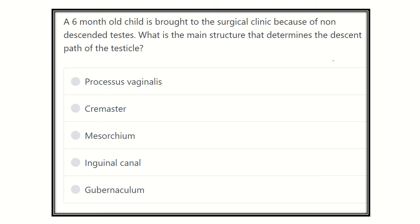Hi everyone, today we are going to discuss another question regarding MRCS, which will be very helpful for your preparation for the MRCS exam. The question is: a six-month-old child is brought to the surgical clinic because of non-descendant testis. What is the main structure that determines the descent path of the testicles?